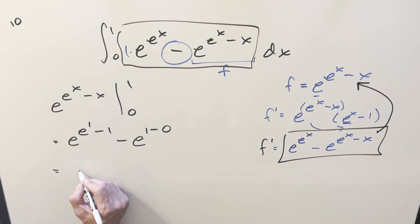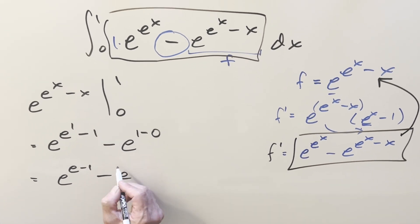And then I'll just clean it up. What we're left with for the solution on this is going to be just e to the e minus one minus e. And that's it.